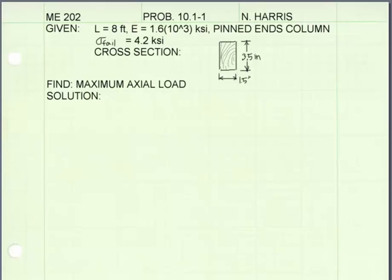There are two failure modes that we can consider for this column. The first one is buckling. The second one is material failure as a result of the compressive load that exceeds the material's compressive strength.